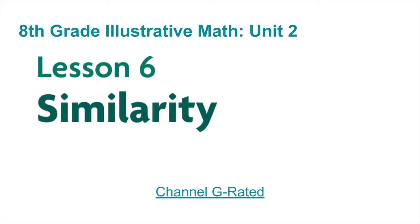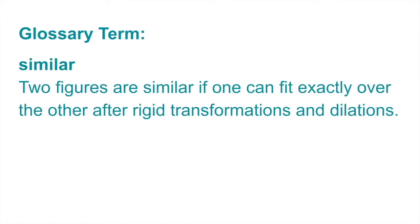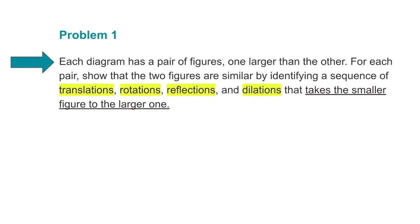8th Grade, Unit 2, Lesson 6: Similarity. Glossary term — similar: two figures are similar if one can fit exactly over the other after rigid transformations and dilations. Number 1: Each diagram has a pair of figures, one larger than the other. For each pair, show that the two figures are similar by identifying a sequence of translations, rotations, reflections, and dilations that takes the smaller figure to the larger one.